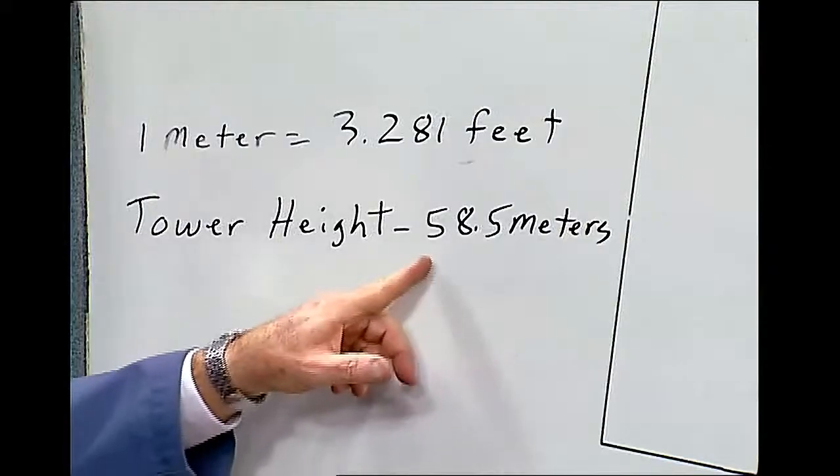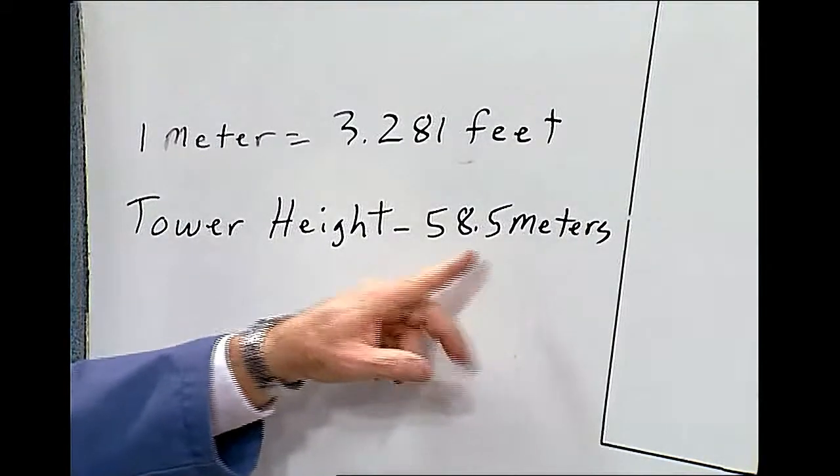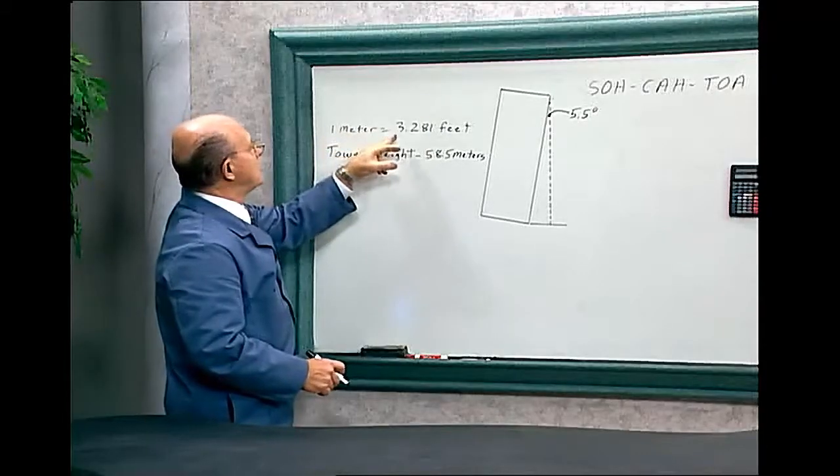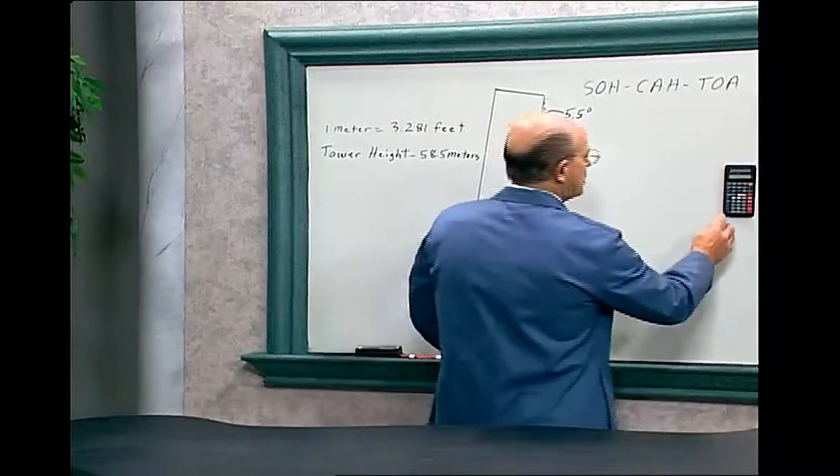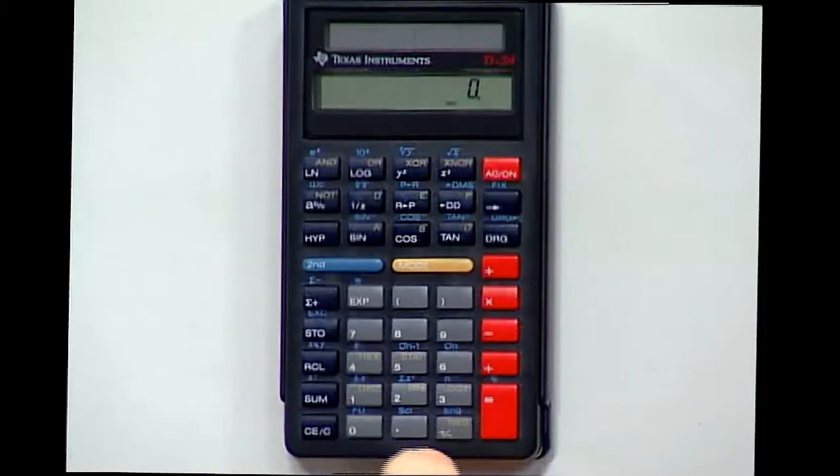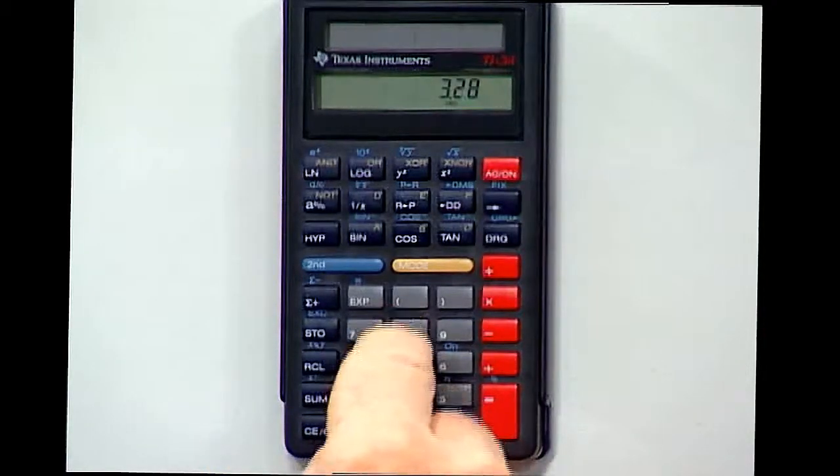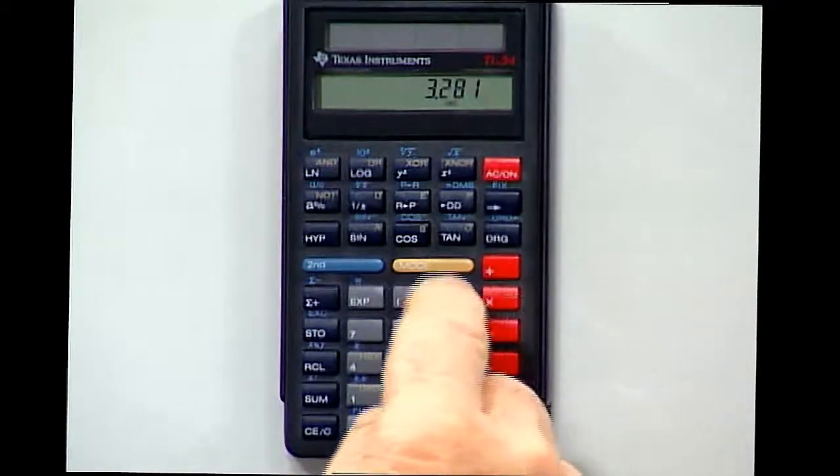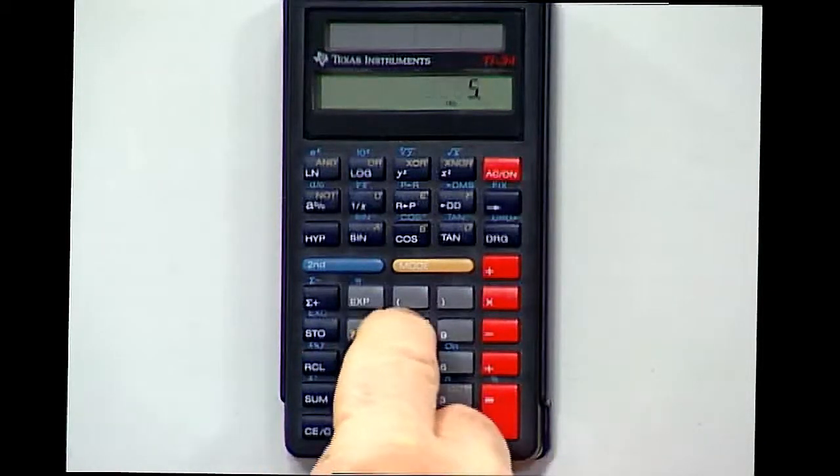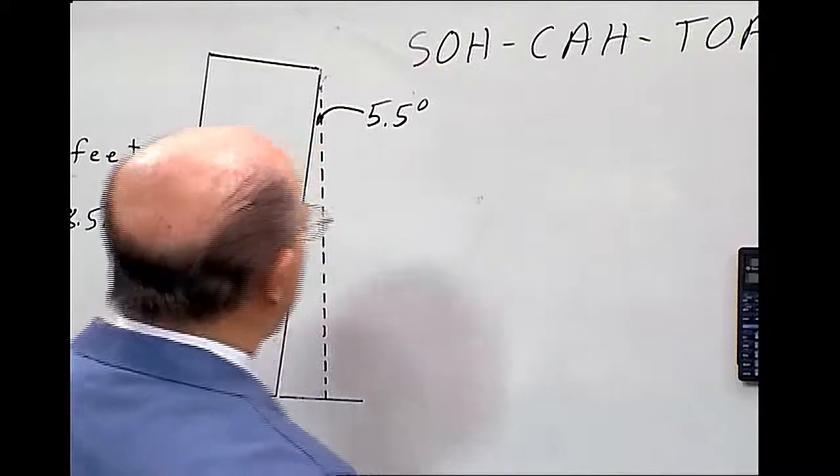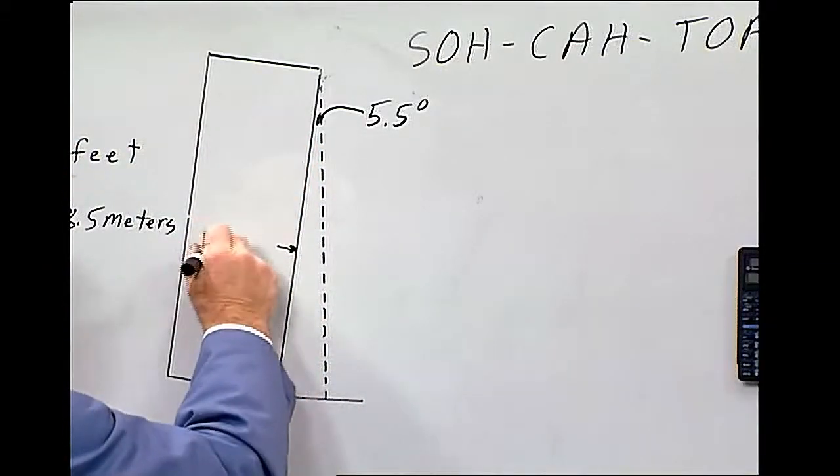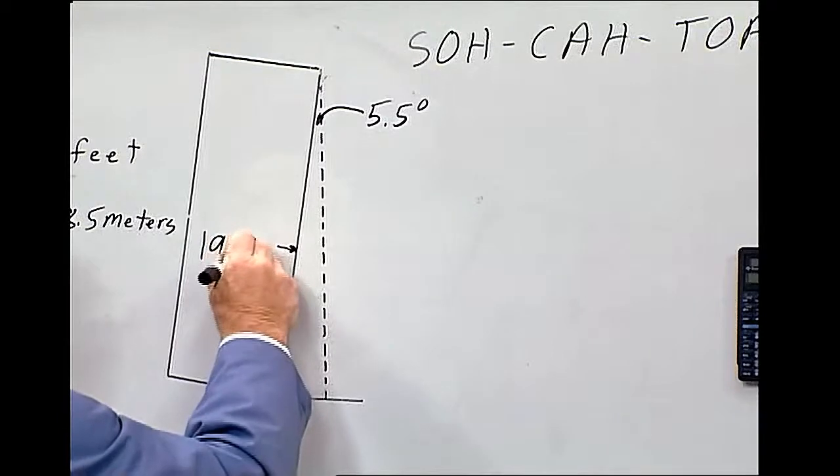The height of the tower is 58.5 meters, and 1 meter equals 3.281 feet. So let's clear the calculator. That's 3.281 times the height, 58.5 meters equals. So the height of the tower is 191.94.